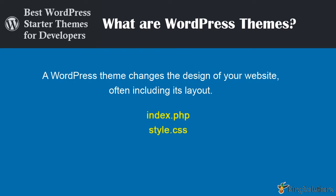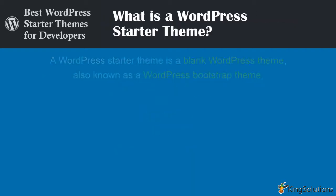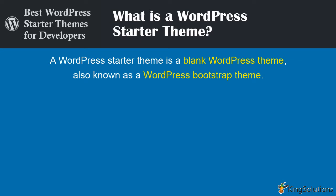Although the WordPress theme repository has thousands of free themes, here I will presume you want to create a custom theme. There are only two files absolutely required in a WordPress theme: index.php, the main template file, and style.css, the main style file. Though not required, most themes include additional files such as template, CSS, JavaScript, and localization files. A WordPress starter theme is a blank WordPress theme, also known as a WordPress bootstrap theme. Such a theme has absolutely no layout defined and minimum design components. These blank WordPress themes do contain the most commonly used templates required in a WordPress theme, and they allow theme developers to build quickly a completely new theme in their own style.